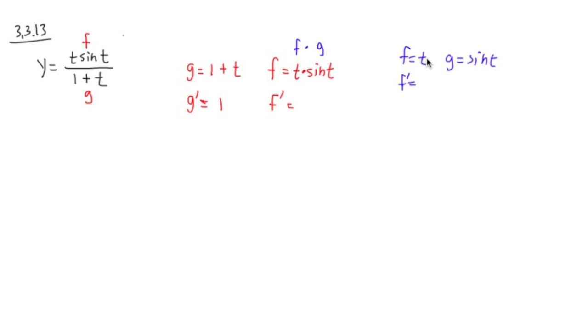f prime is going to be 1. And derivative of sine t is going to be cosine t, just like that. So far, so good. And we're going to use this to construct our derivative for t sine t.